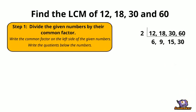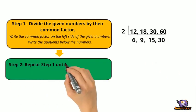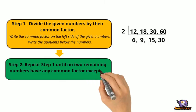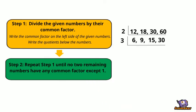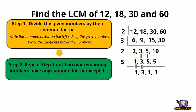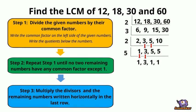Step 2: Repeat step 1 until no two remaining numbers have any common factor except one. Step 3: Multiply the divisors and the remaining numbers written horizontally in the last row.